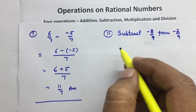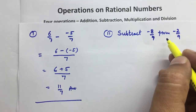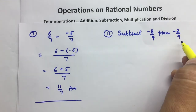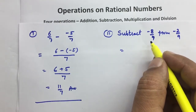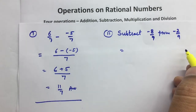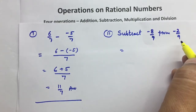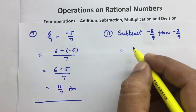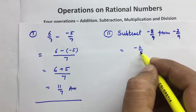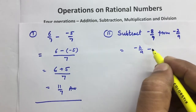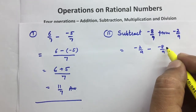Second question mein likha hain: subtract minus eight upon nine from minus two upon nine. Ab jisko humne subtract karna hain, uska matlab hain minus two upon nine usko hum pehle likhenge. Iska matlab bhi ye hua ki minus two upon nine minus minus eight upon nine.